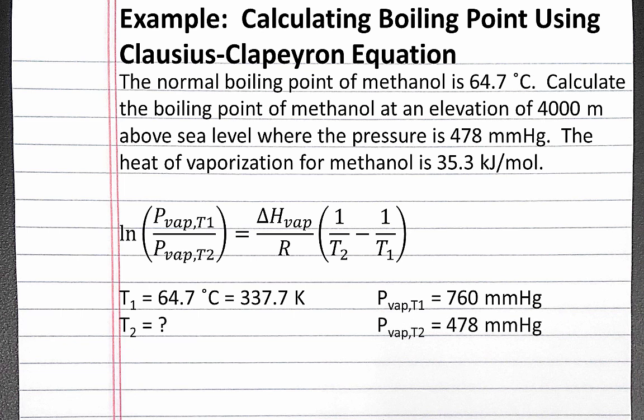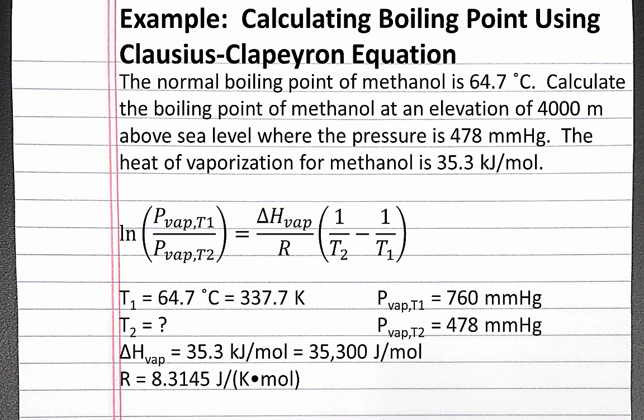If we want to find the boiling point when the external pressure is 478 millimeters of mercury, we'll solve for T2 in this equation. We're given the heat of vaporization in units of kilojoules per mole. We'll need to convert these units to joules per mole because of the units in the ideal gas law constant R, which is 8.3145 joules per Kelvin mole. This is also why we had to convert our degrees Celsius to Kelvin.